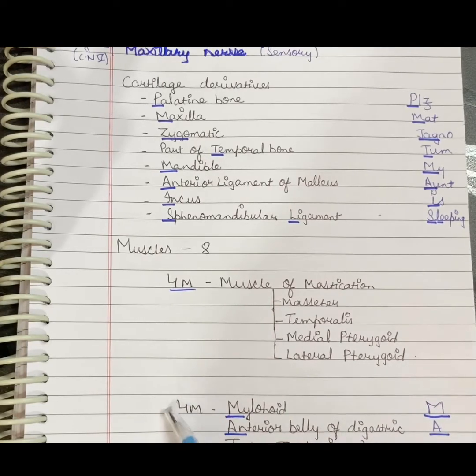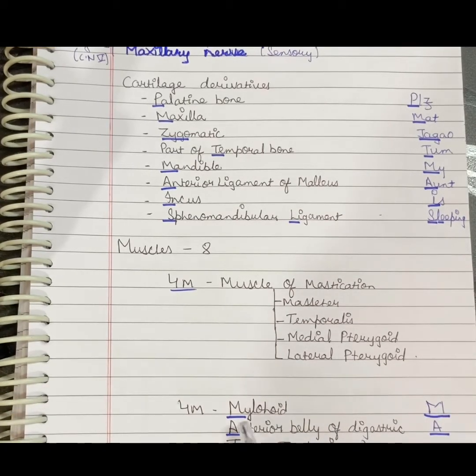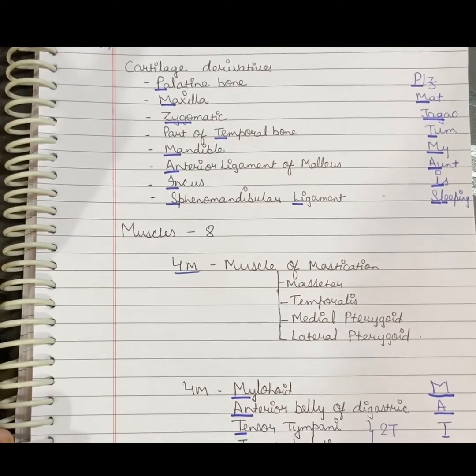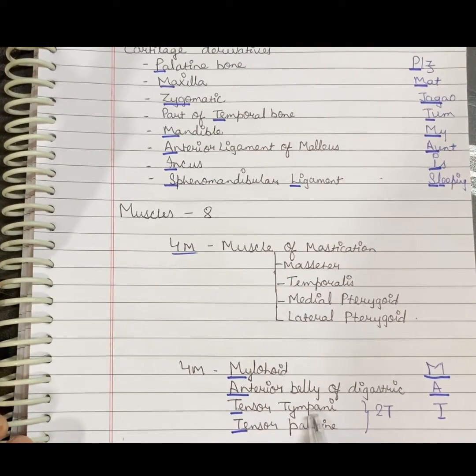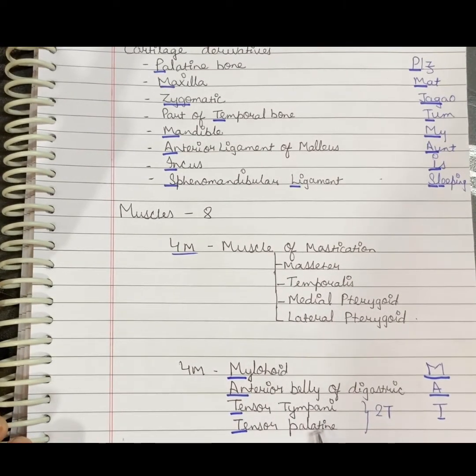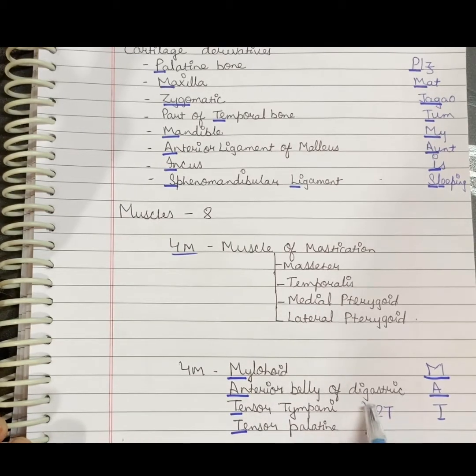The other four muscles can be remembered as MAT: M stands for mylohyoid, A stands for anterior belly of digastric, and T stands for tensor tympani and tensor palatini. Two T's for tensor tympani and tensor palatini, so we can remember it as MAT.